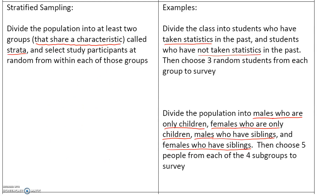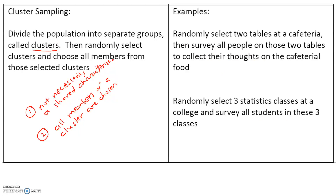In stratified sampling we only choose some people from each subgroup — for instance, five people or three random students. In cluster sampling, the cluster doesn't necessarily have a shared characteristic; it's just a group of random people. But we take all members of whichever cluster is selected. For example, randomly select two tables at a cafeteria and survey all people at those tables, or randomly select three statistics classes at a college and survey all students in those three classes.